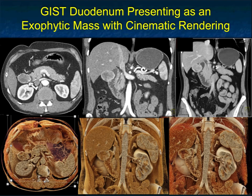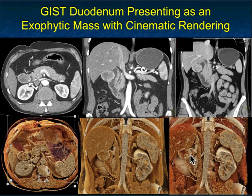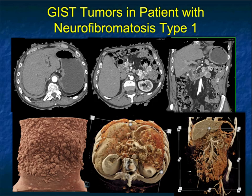Here's another GIST tumor, but it's exophytic coming off the duodenum right here, and here in the coronals. Very nicely shown are the textural changes and the relationship to the duodenum, really nicely shown on the 3D mapping. These bottom two images really give you a feel about how we can look at necrosis and how the texture map can change depending on the parameters you use.